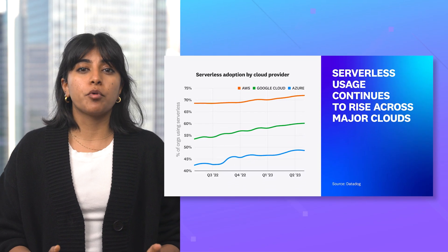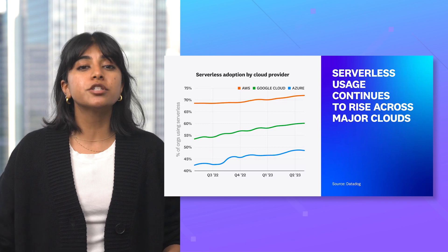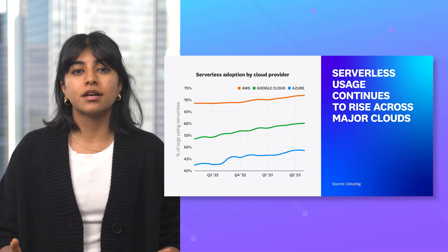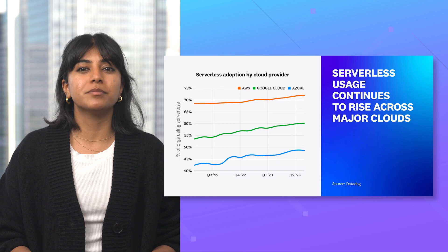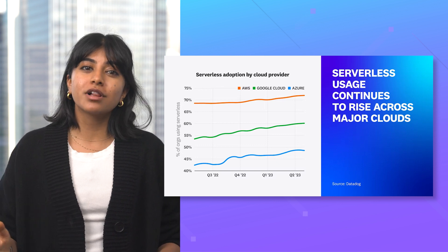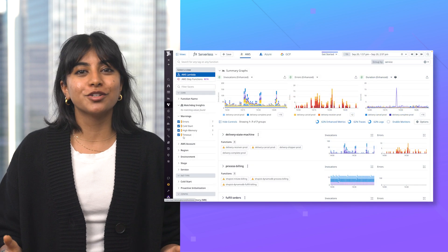Serverless infrastructure tools are able to abstract away many of the infrastructure and operational challenges of modern software development. However, given the managed nature of these services, visibility into utilization, errors, and areas of optimization can be limited yet critical to maintain robust observability of these workloads and applications. Our recently released State of Serverless report found that serverless adoption is continuing to grow across all major cloud providers. Today, we're excited to share that we've added support for three more popular serverless platforms: AWS Step Functions, Google Cloud Run, and Azure Container Apps. Let's take a closer look.